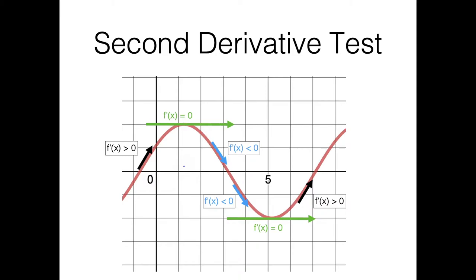So that's basically the intuition we're going to use. If you remember from the previous video, we're looking at the same graph here. The way we figured out how the first derivative test works is that we found this max and this min, and we looked at what the first derivative was doing around that specific point.